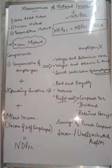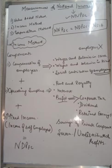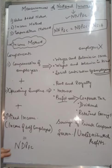The third component is mixed income. Some people are self-employed — for example, if I run my own coaching centre, my income is mixed income because I am not paying myself a salary but I am still providing services. A doctor running their own clinic from their residence is another example of mixed income. We call it income of the self-employed, and it is also a factor income because they are rendering services and earning income.